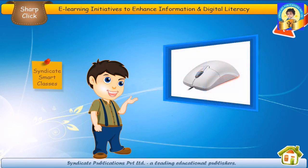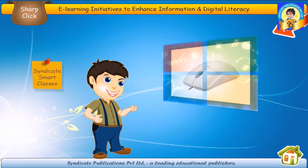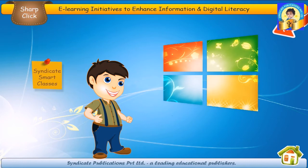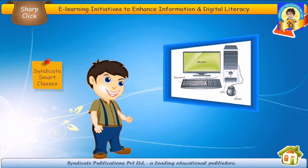The mouse has three buttons. This is the right click button, this is the left click button, and this is the wheel button. The mouse has a long tail in the form of a wire which is connected to the CPU.